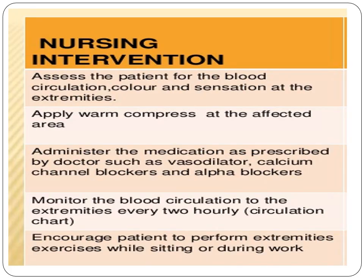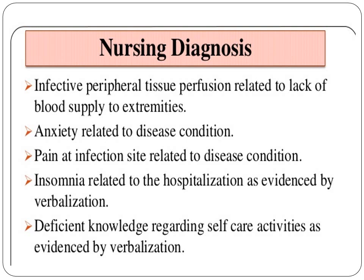The nursing intervention includes assessing the patient's blood circulation, color, and sensation; applying warm compress; administering medications as prescribed; monitoring blood circulation; and encouraging patients to perform exercises of the extremities even while sitting. The nursing diagnoses will include ineffective peripheral tissue perfusion, anxiety, pain at the site, risk of infection, activity intolerance — because the patient is not able to perform what they normally did — nutritional imbalances, and depression.